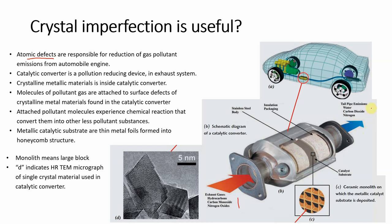Inside the exhaust system of a car, there is a catalytic converter. The catalytic converter's job is to take the exhaust gases — which include poisonous gases produced by the engine such as hydrocarbons, carbon monoxide, and nitrogen gases — and after a chemical reaction, convert them into less hazardous gases like water, carbon dioxide, and nitrogen, which are then expelled outside the vehicle.